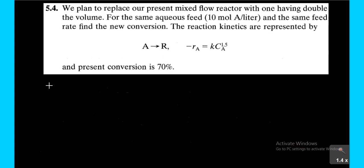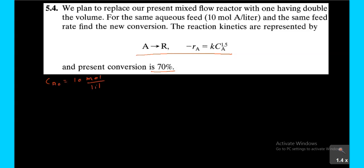We plan to replace our present mixed flow reactor with one having double the volume. For the same aqueous feed and feed rate, find the new conversion. The reaction kinetics are represented by A gives rise to R, where -rA equals K times CA to the power 0.5. The present conversion is 70%. Given data: CA0 equals 10 mole per liter and the rate equation is -rA equals K times CA to the power 1.5.